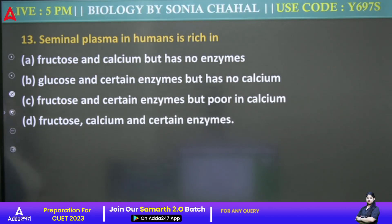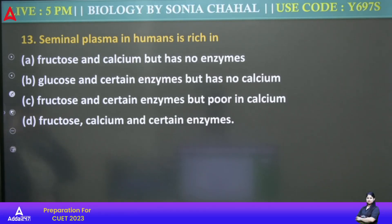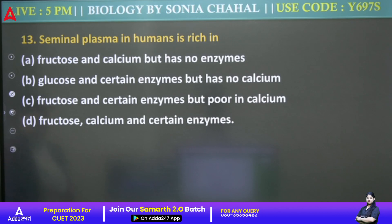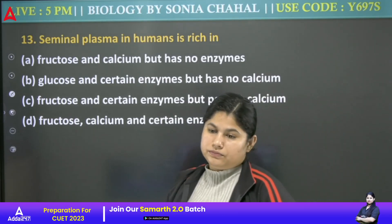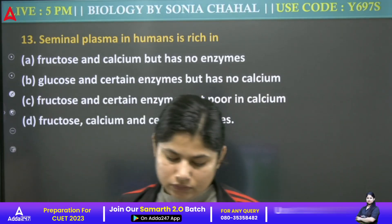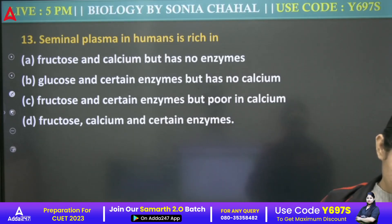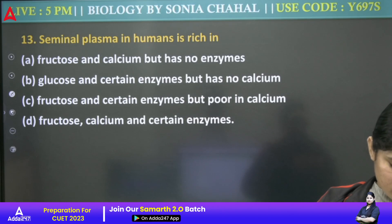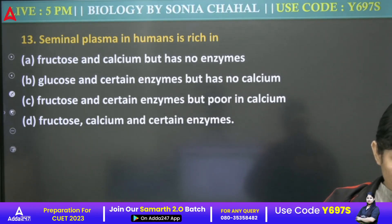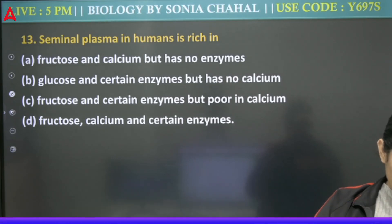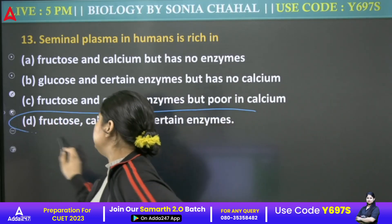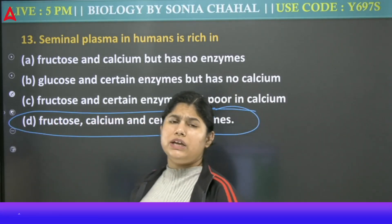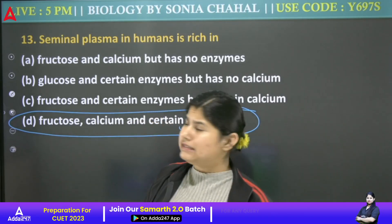Next: Seminal plasma in humans is rich in — fructose and calcium but has no enzyme; glucose and certain enzymes but no calcium; fructose and certain enzymes but poor in calcium; or fructose, calcium, and certain enzymes? Fructose is there, sugar is there — we know that. And yes, there are enzymes too. We hear acrosome, hyaluronidase enzyme, acrosin enzyme — so all of those are there. Answer is D.